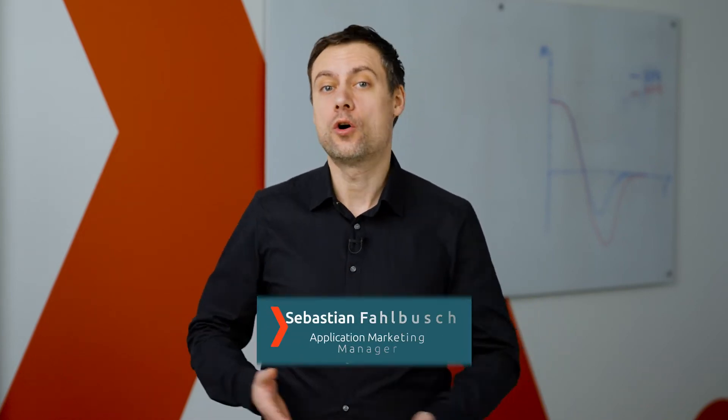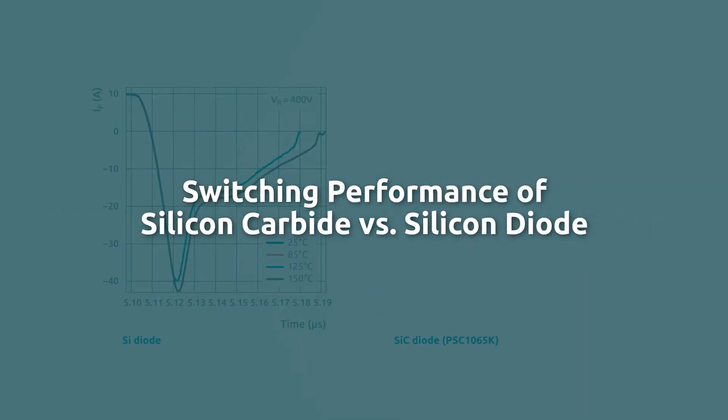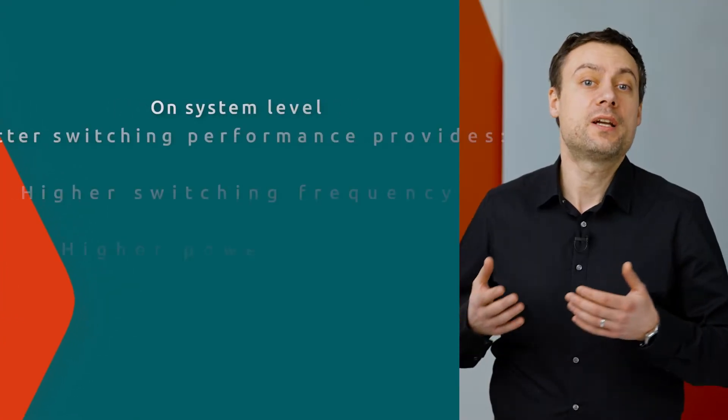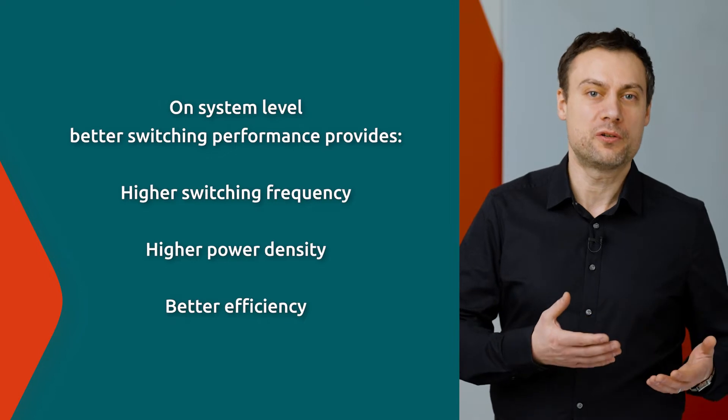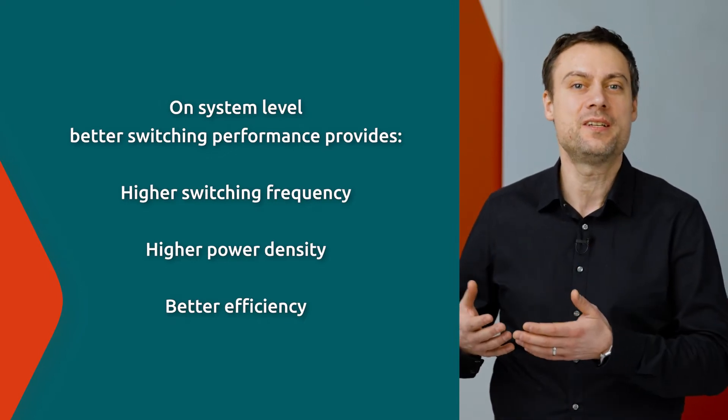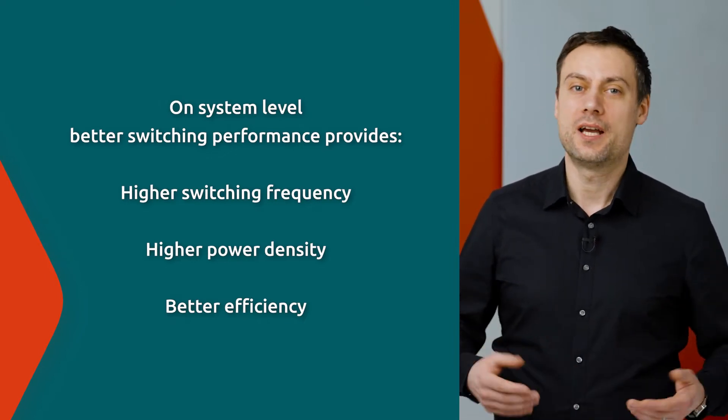Which diodes have the better switching performance — silicon or silicon carbide? Switching performance is a key parameter when it comes to diode operation in switch mode power supplies. On the device level, better diode switching performance means lower loss per switching cycle. Looking at the system level, these benefits can be exploited to design power converters with higher switching frequency, higher power density, and better efficiency.